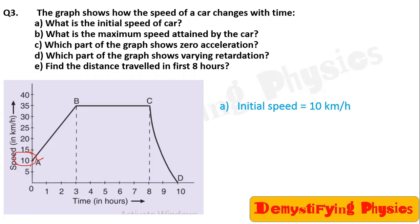Till 3 seconds, the car accelerates uniformly and increases its velocity from 10 kilometers per hour to 35 kilometers per hour. Then it moves with constant speed, meaning zero acceleration, and then it retards non-uniformly. So the maximum speed attained by the car is 35 kilometers per hour.